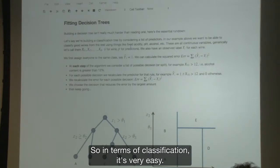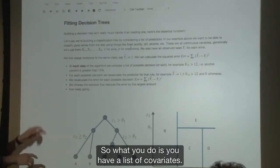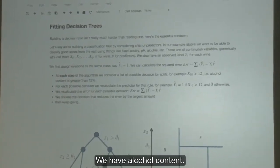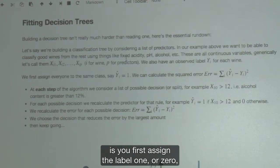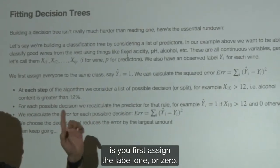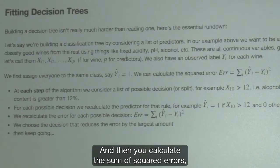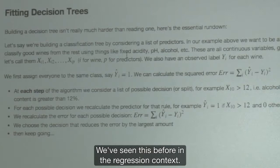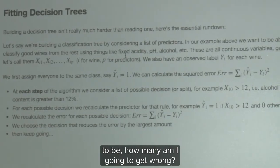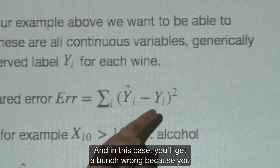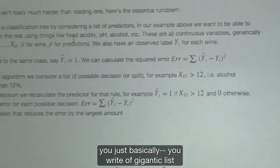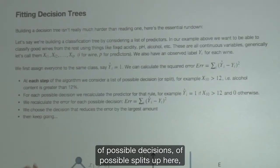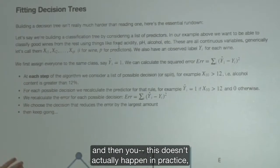But more seriously, how do we actually fit decision trees? So in terms of classification, it's very easy. What you do is you have a list of covariates. So in our example, we have wine, we have the acidities, we have sugar content, we have alcohol content, we have all these predictors. And then we have labels, whether the wine is good or not. The way that the tree is built is you first assign the label one or zero to all of the observations.